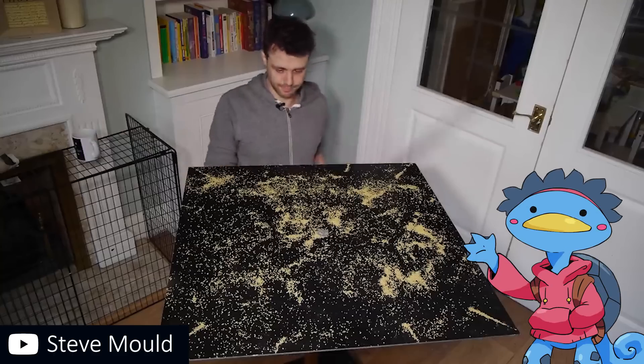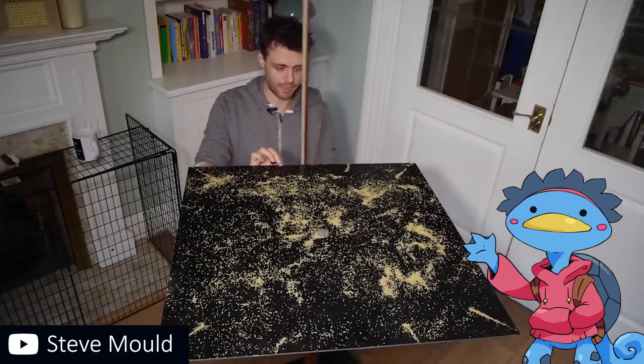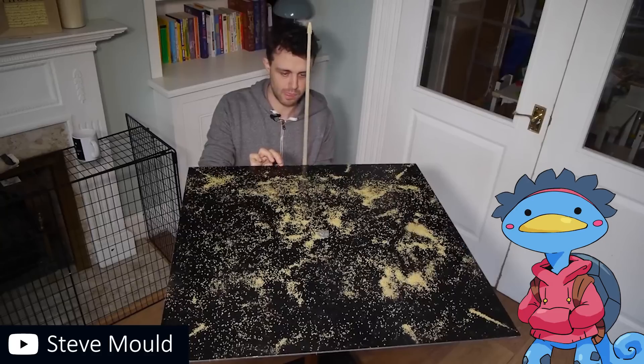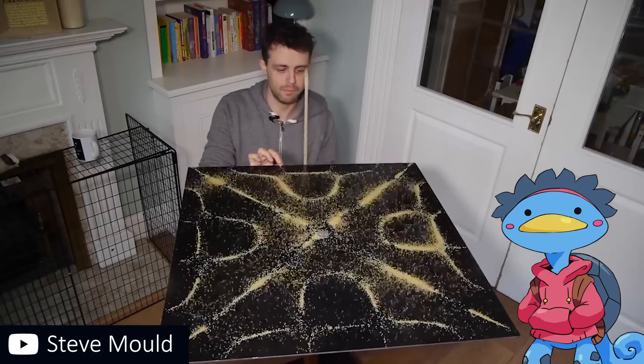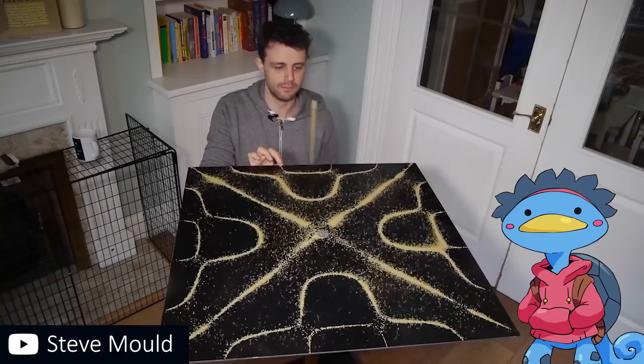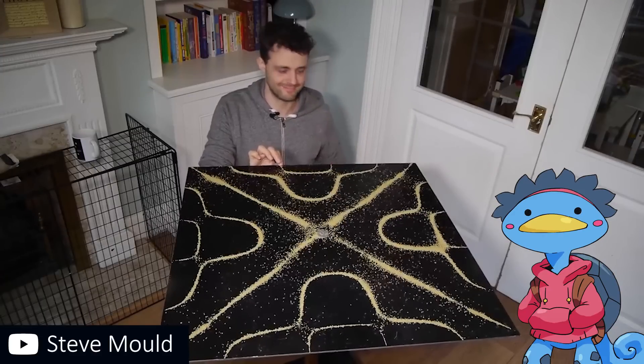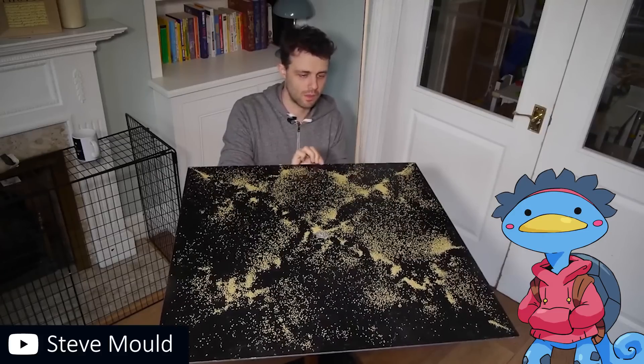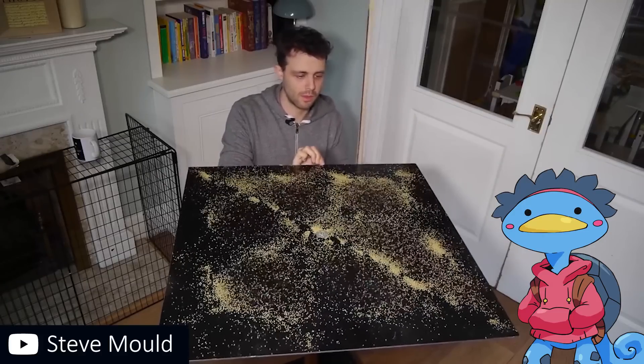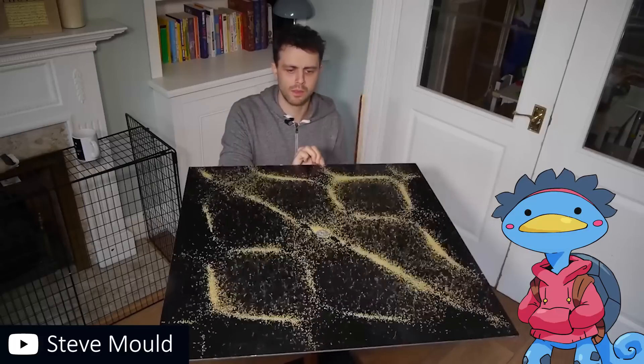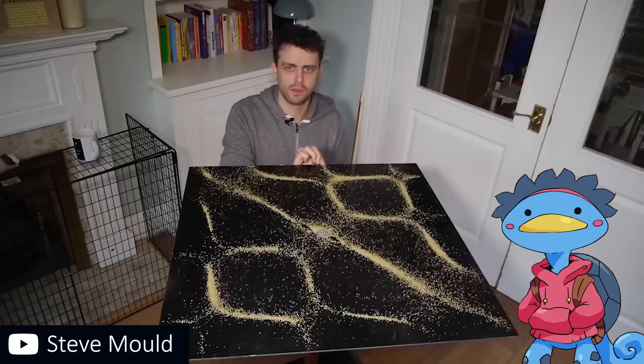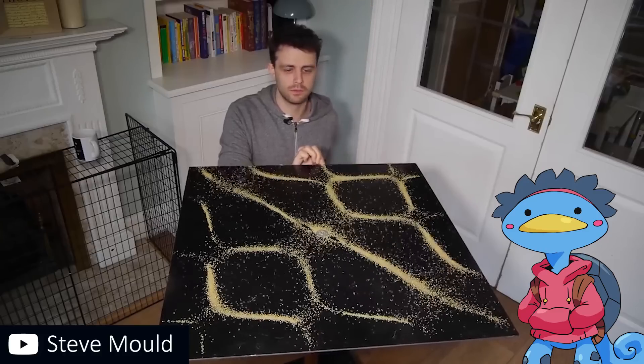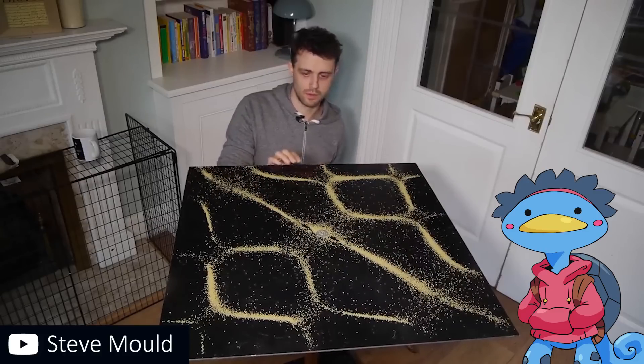You might have seen Chladni plates in science class or on your favorite science YouTube channels. They're a fun way of visualizing the effects of vibration and thus sound. The setup is a simple metal plate connected to a device capable of emitting sound to vibrate the plates. Then, covering the surface with sand, the grains of sand will start to rearrange and accumulate, forming patterns that are specific to the sound frequency and the physical properties of this particular plate.